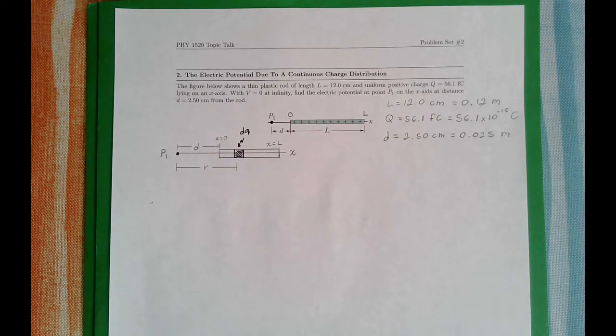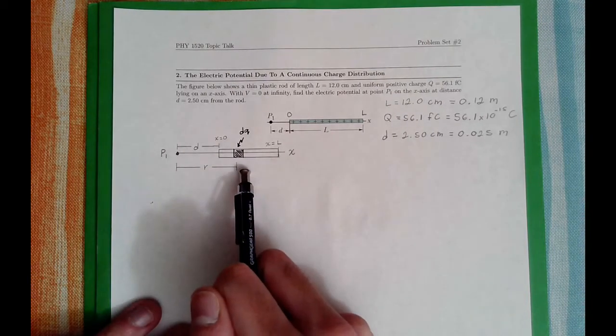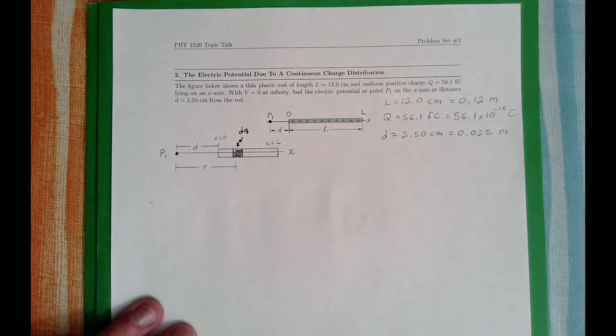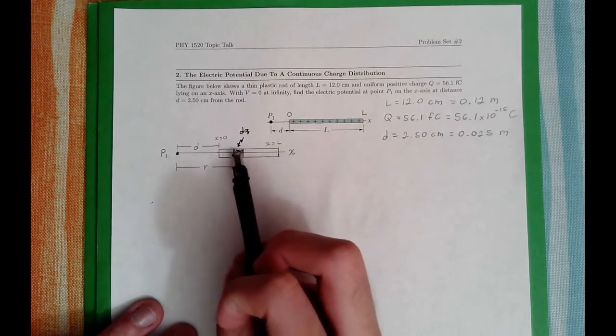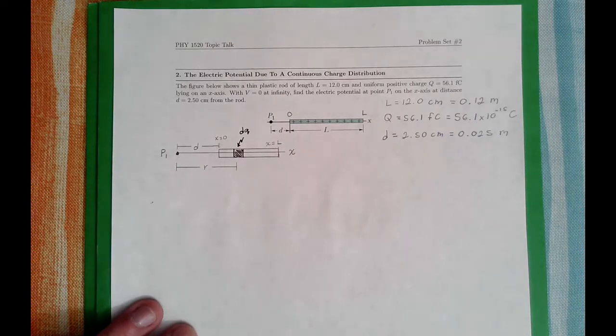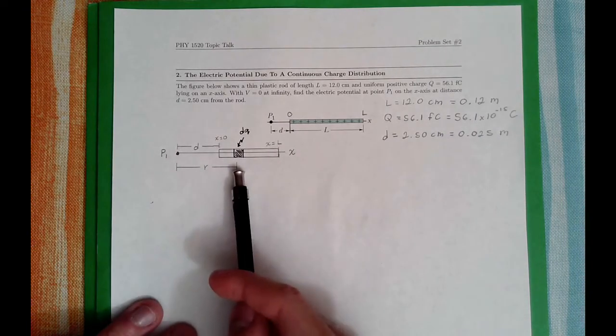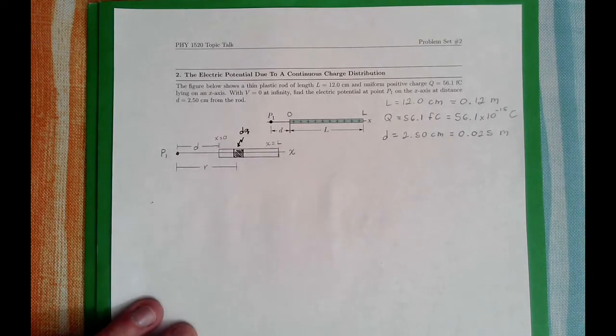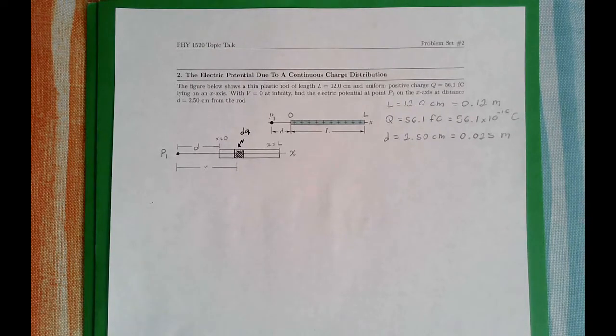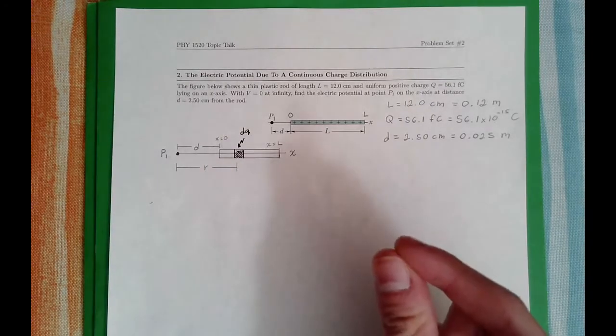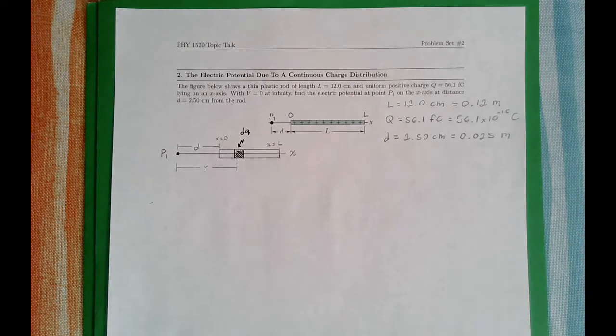So what do we do? We still do the same idea where we add a whole bunch of charges. But in this case, for a continuous one, the trick is to make very small segments called DQ and add up all the DQs to the length of the rod. Now, here in my diagram, DQ is a lot bigger than it should be, because obviously we need to be able to see and visualize it. But DQ is infinitesimally small, very very small.